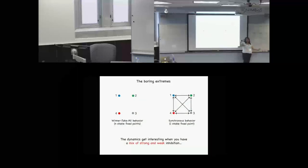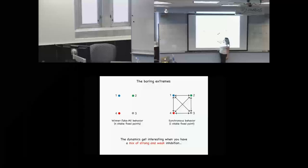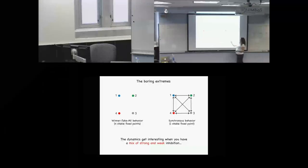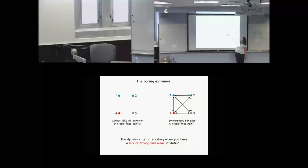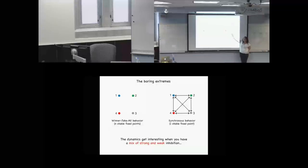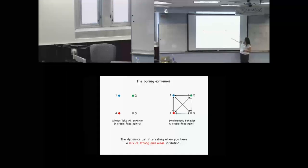Let's start with the boring extremes. If we had no edges in our network, then every neuron would be strongly inhibiting every other neuron and we'd end up in a winner-take-all situation — n stable fixed points, one for each neuron firing on its own. The other extreme: all possible edges, so every neuron is weakly inhibiting every other. You can still be firing under weak inhibition, and we actually get synchronous behavior where all four nodes fire at the same rate — one stable fixed point. Still pretty boring.